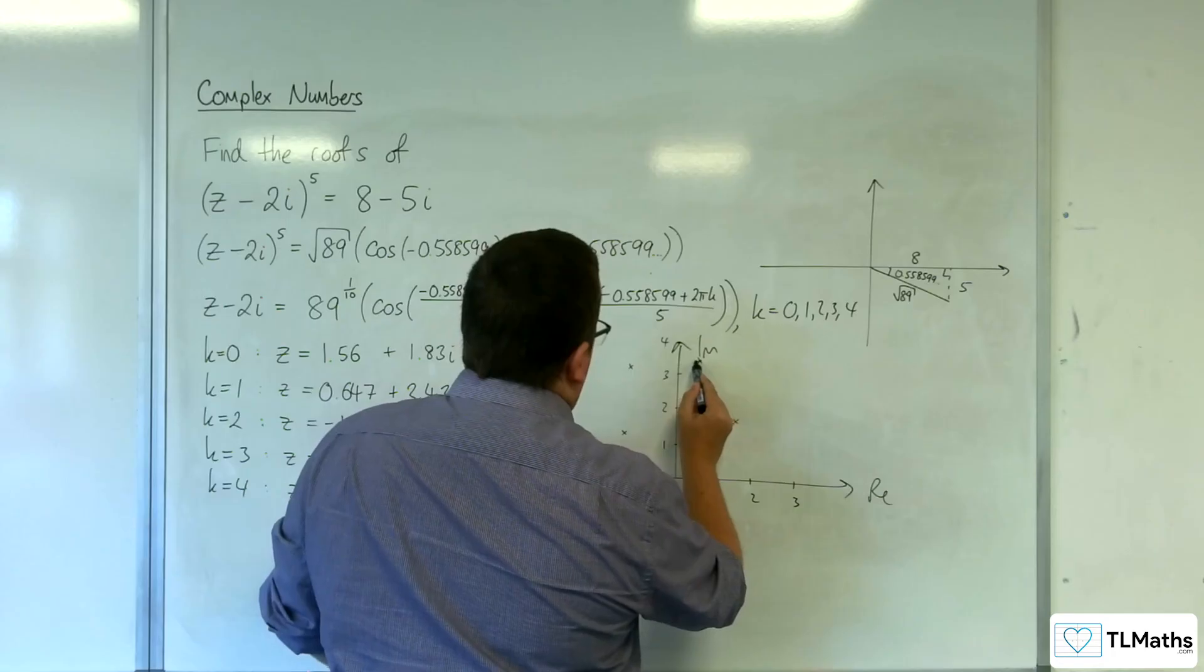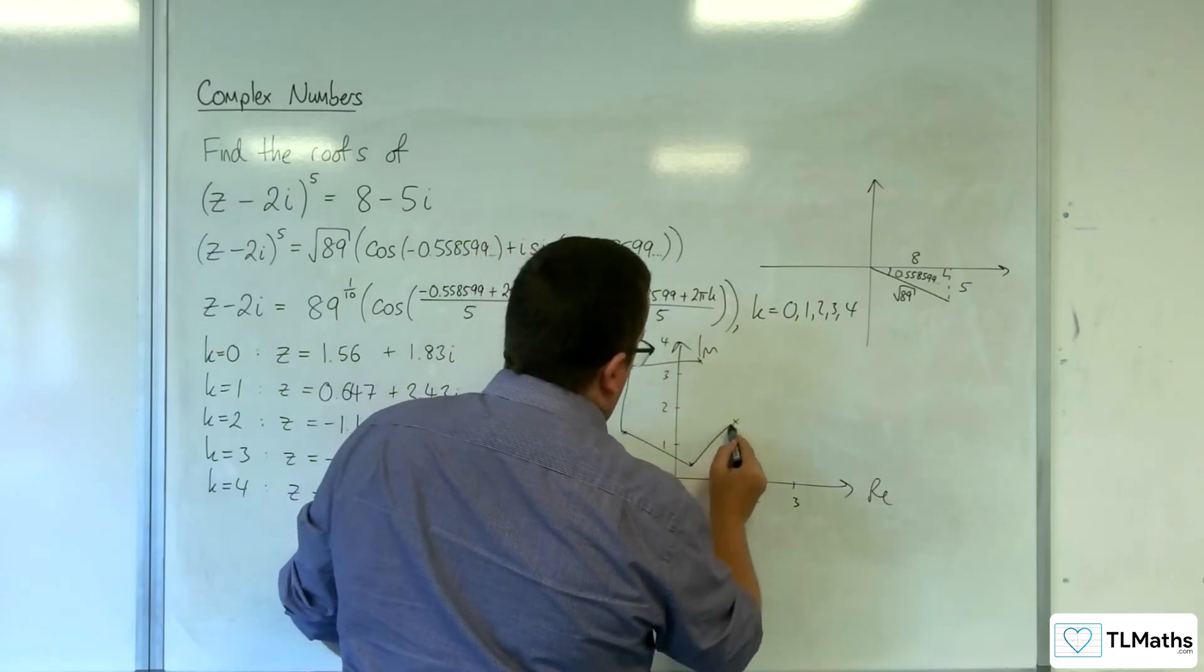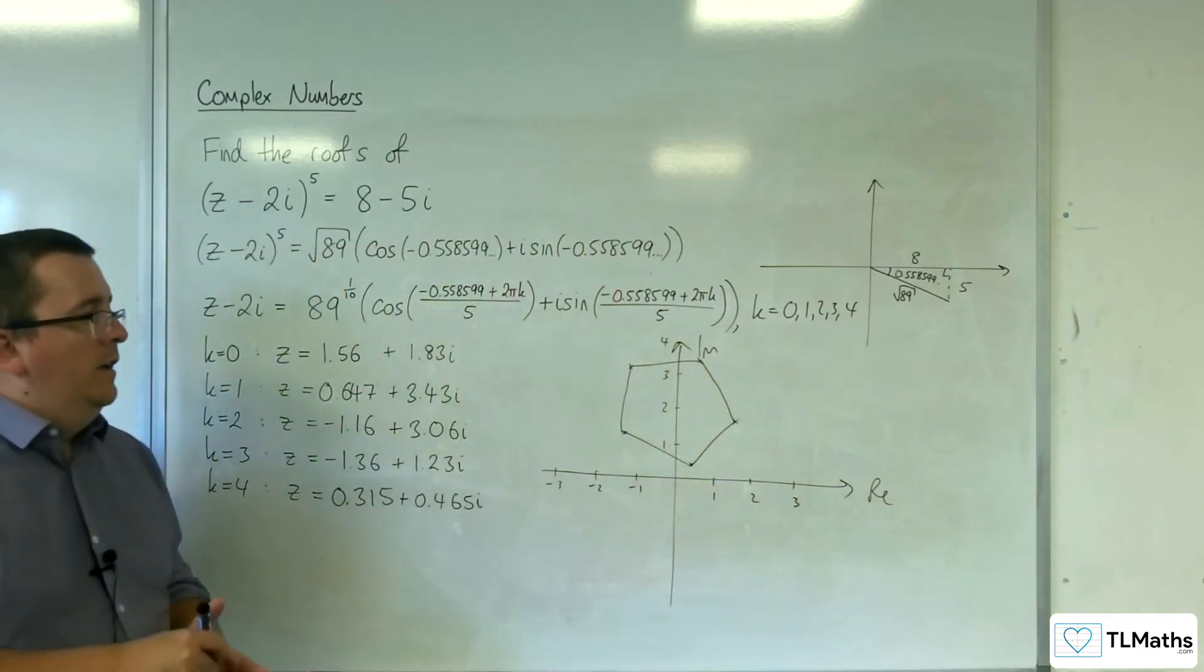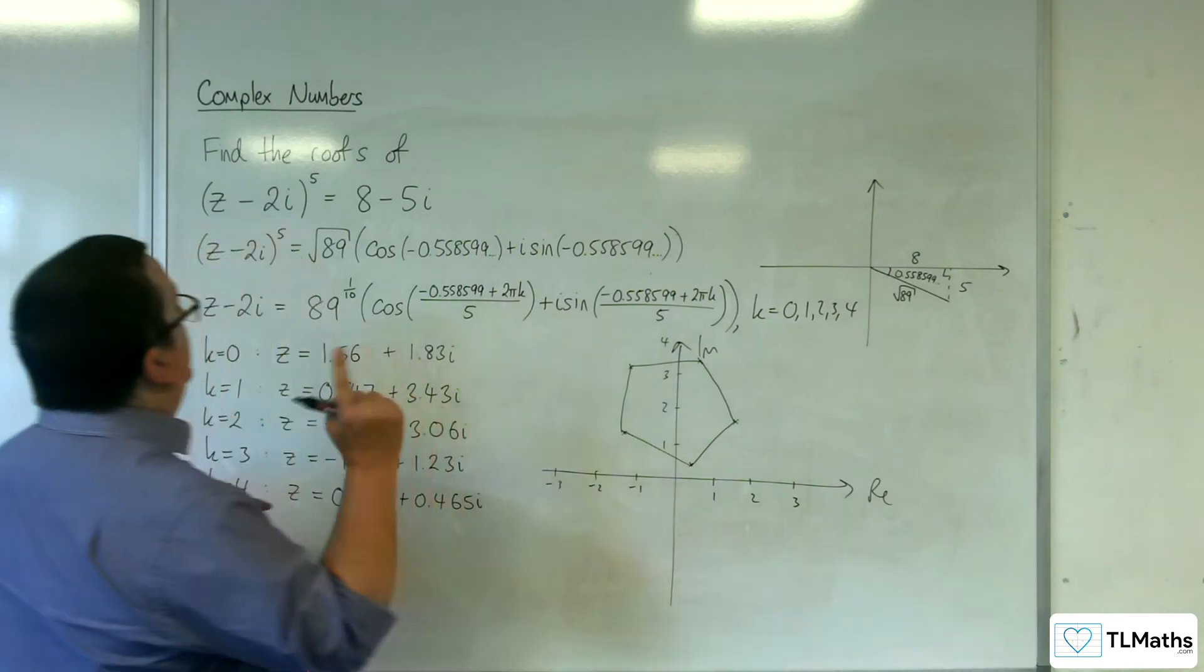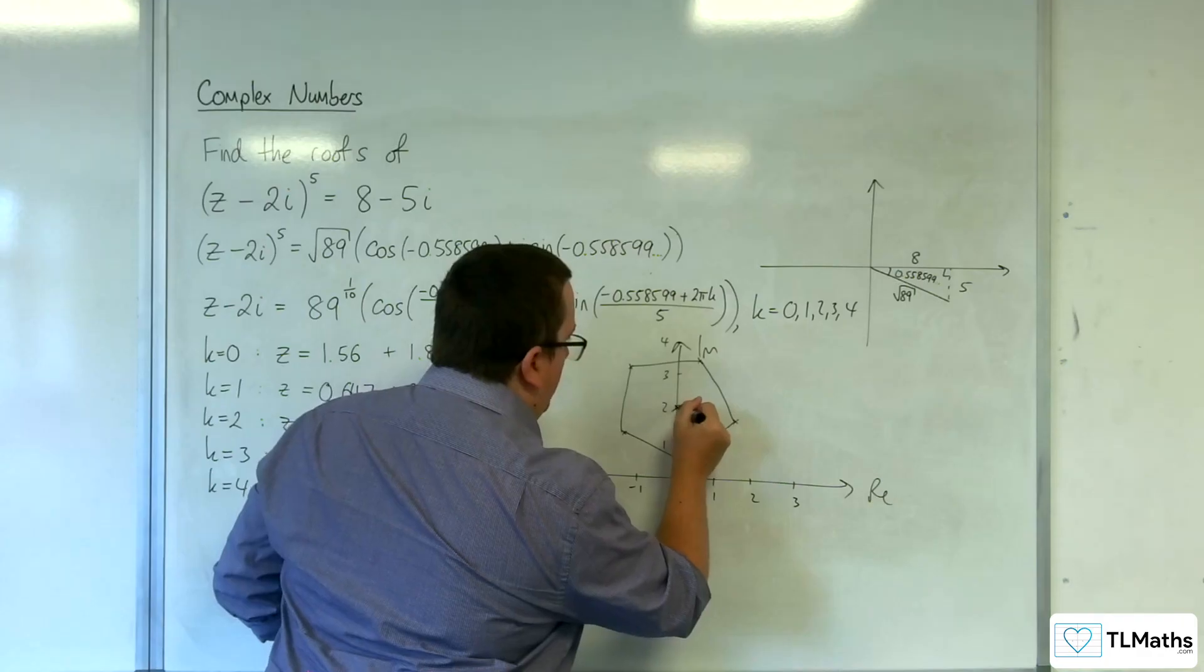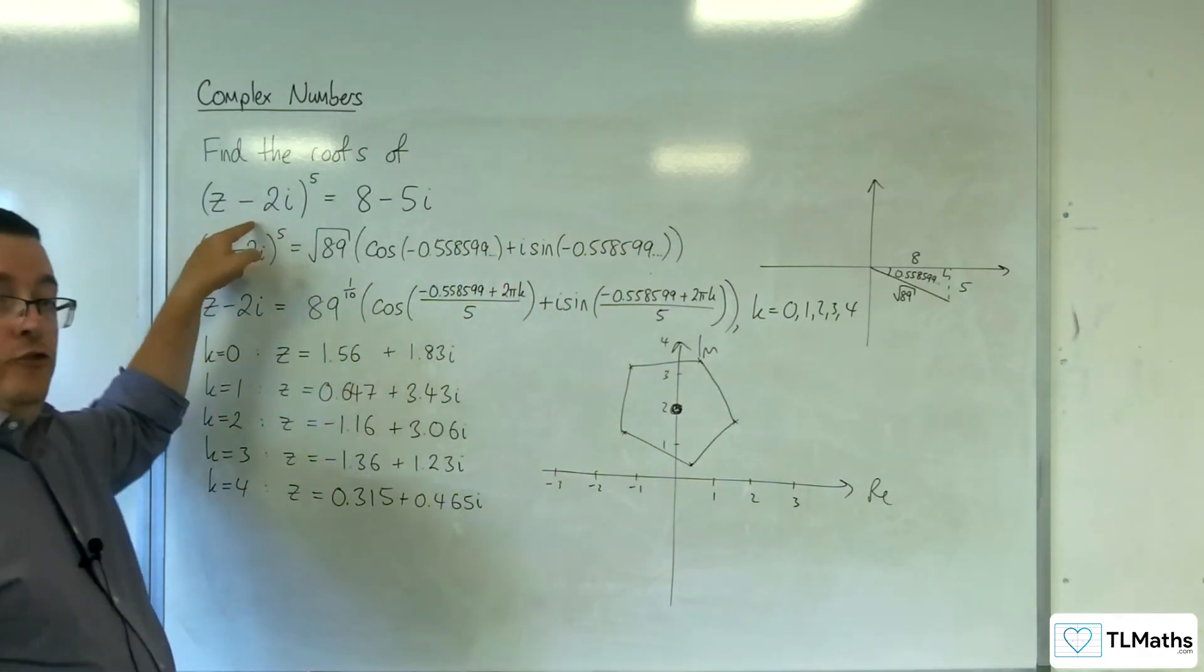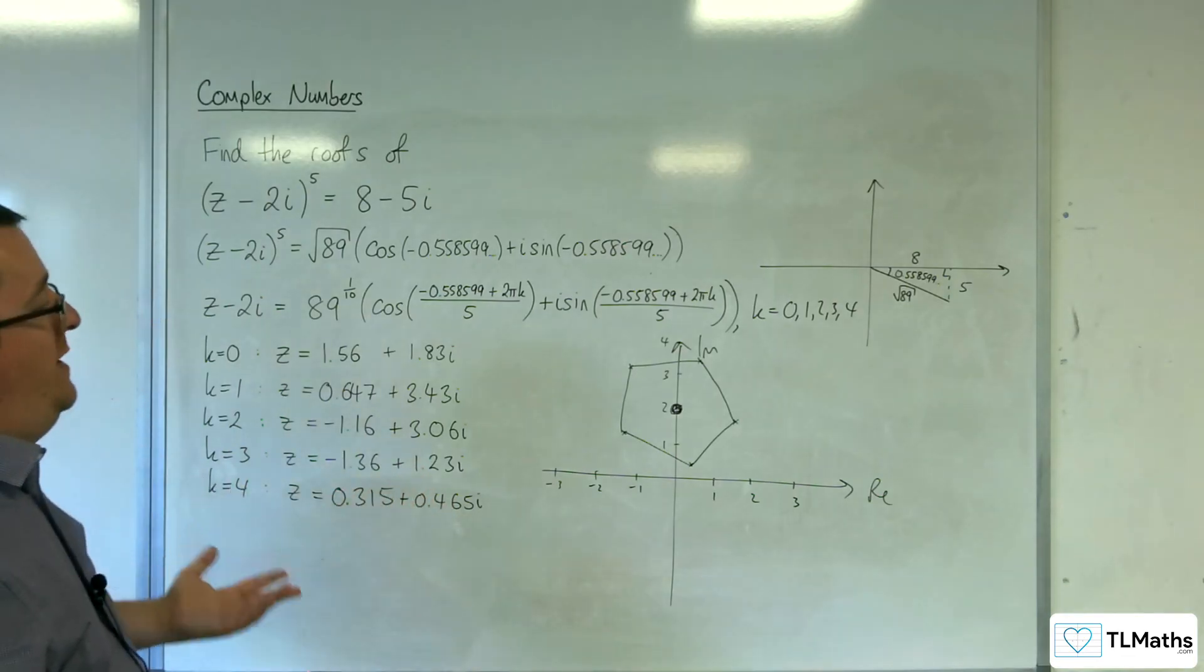And what you can see is your pentagon. So the key here is the pentagon is centred at 2i. So that's your central point.